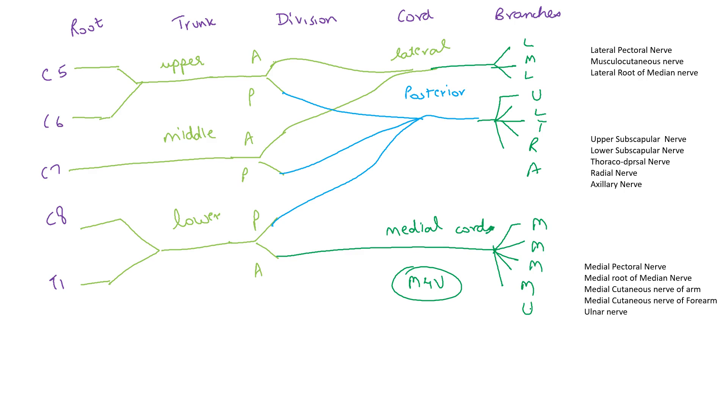In addition to this, there are certain branches coming from the roots that is the long thoracic nerve which comes from C5, C6 and C7.